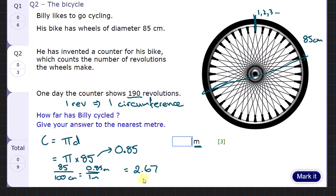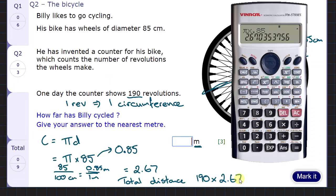There's one circumference. We've done 190, the total distance. There's 190 of them. I multiply my answer by 190, lots of the circumference in metres. Gives me 507.36.